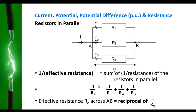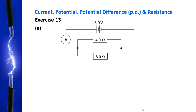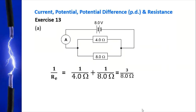After you have obtained the value of 1 over R effective, you need to find the reciprocal to get the value of R effective. Exercise 13 part A requires you to calculate the effective resistance of the 4.0 ohm and the 8.0 ohm resistors connected in parallel. Using the formula, 1 over R effective equals 1 over 4.0 ohm plus 1 over 8.0 ohm, you get 3 over 8.0 ohm. But that is not the answer — you need to find the reciprocal of 3 over 8.0 ohm. So you invert it and get an answer of 2.7 ohm, correct to two significant figures.